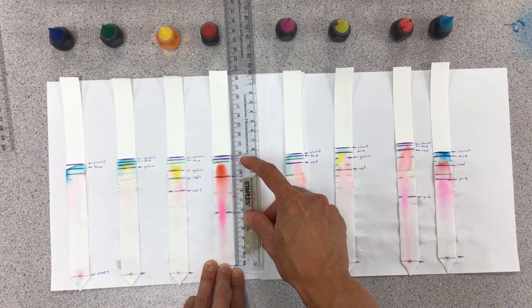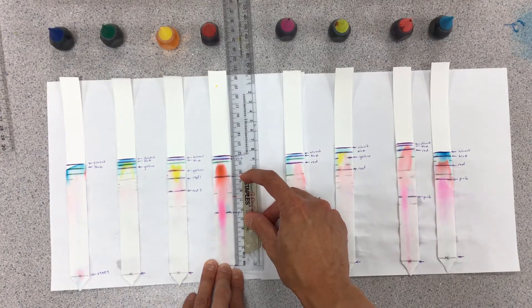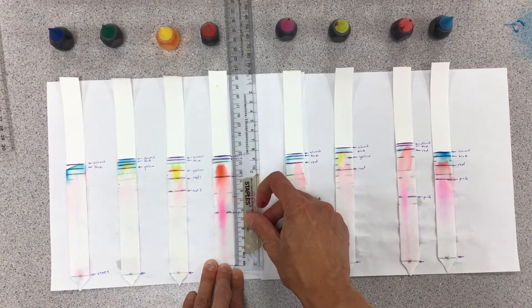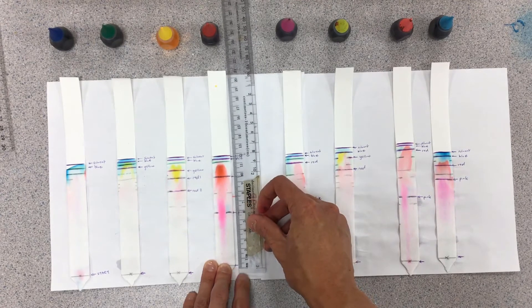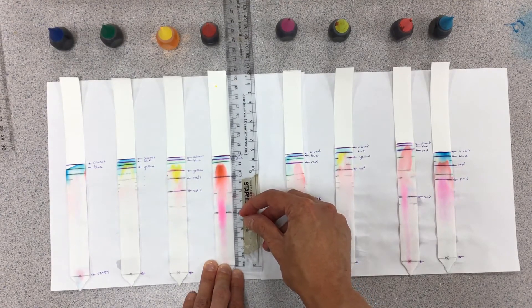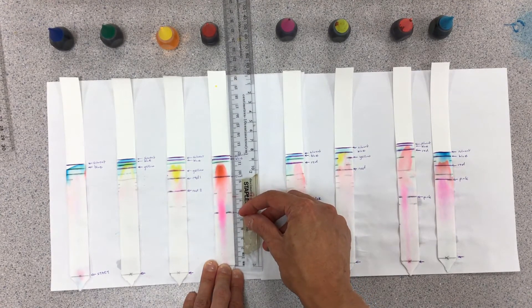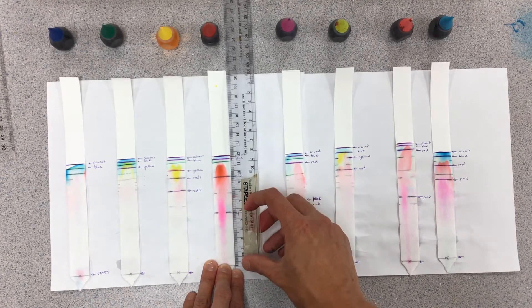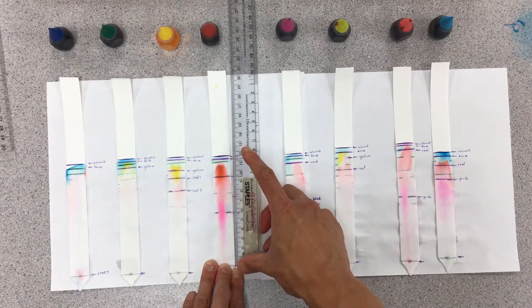The blue is a little bit shorter, maybe 11.2. We have a red line here, about 9.4 or so. We had a little bit of pink show up in this mixture, maybe about 5.6 or so. The ratio of fronts is just the solute distance divided by the solvent distance.